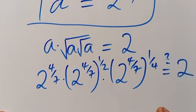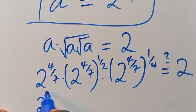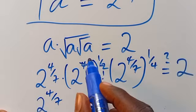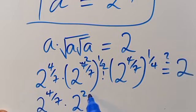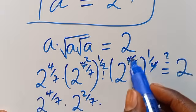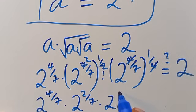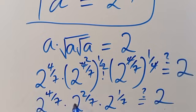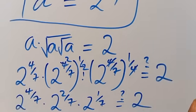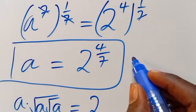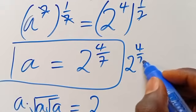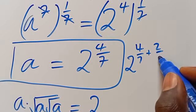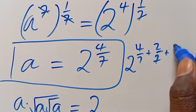From here, we have 2 to the power of 4 divided by 7, multiplied by 2 to the power of 4 divided by 7 times 1 divided by 2, which is 2 divided by 7, multiplied by 2 to the power of 4 divided by 7 times 1 divided by 4, which is 1 divided by 7. Since the base is the same, we add the powers: 4 divided by 7, plus 2 divided by 7, plus 1 divided by 7.